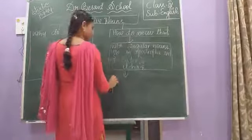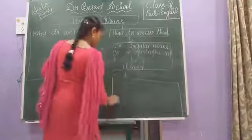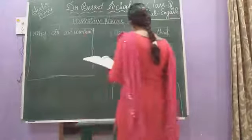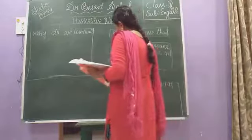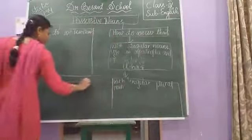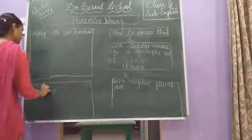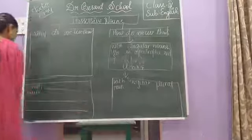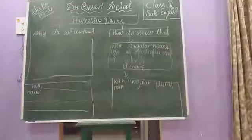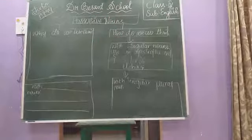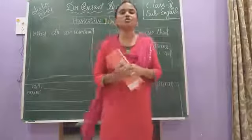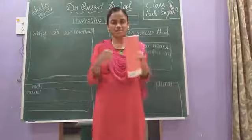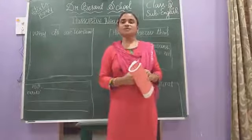With irregular plurals — this also I told you. Plural noun. And here with some other types also. Children, tell me: why do we use possessive nouns? To show the relationship or belongingness of the noun to the object — what is the relationship between them, the belongingness of those two nouns. We use possessive nouns for that.